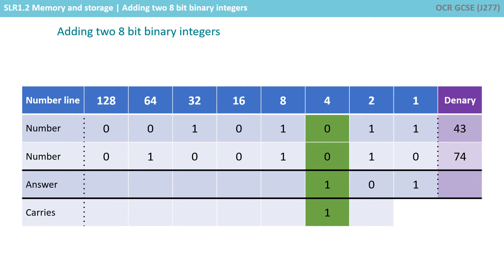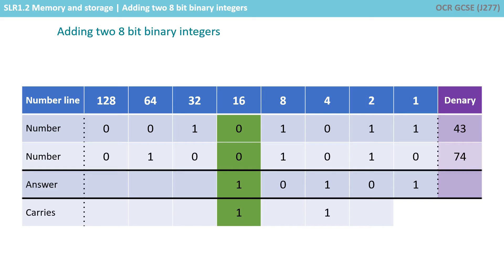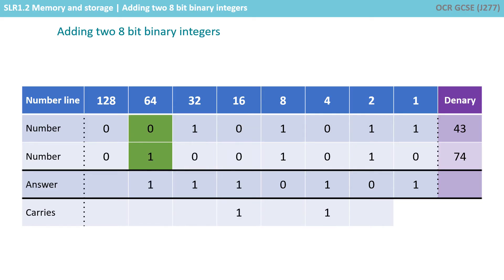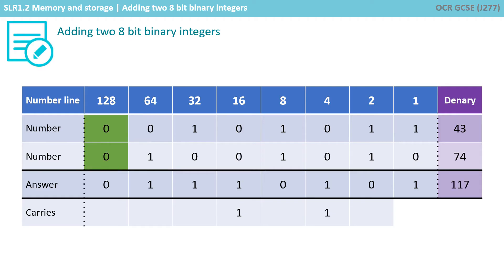Now we have a 0, a 0, and the carry 1: 0 plus 0 plus 1 is 1. Then 1 and 1 is 0, carry the 1. Then 0, 0, and the carry 1 is 1. Then 1 and 0 is 1. Then 0 and 1 is 1. And 0 and 0 is 0. Adding up the columns with 1s — 64 plus 32 plus 16 plus 4 plus 1 — gives us 117.